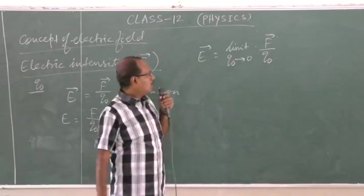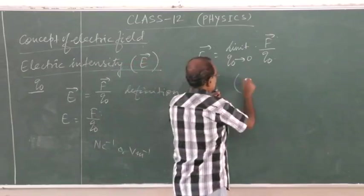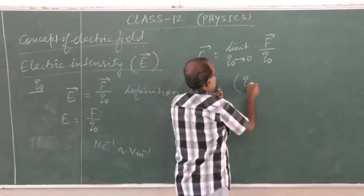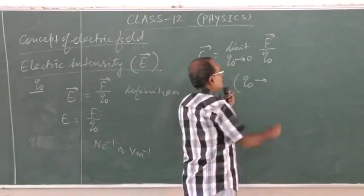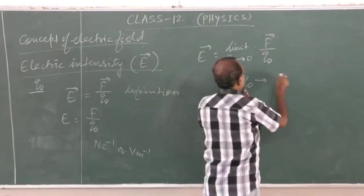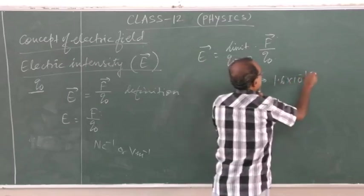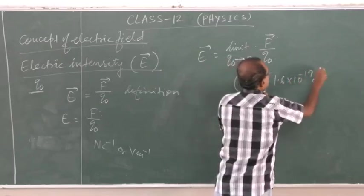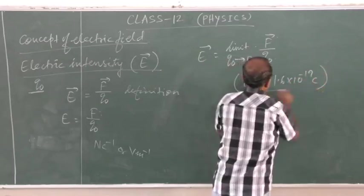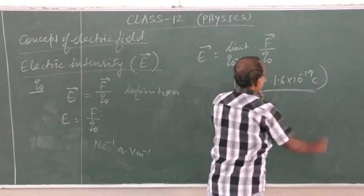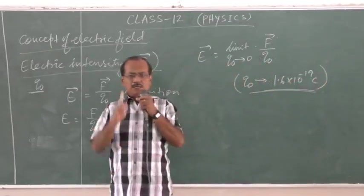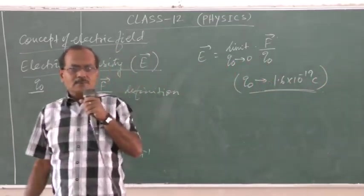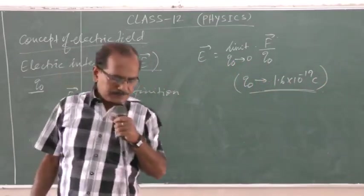Also keep in mind that the value of the test charge Q₀ must not be less than the charge of one electron — that is the minimum possible value.